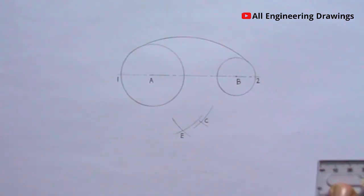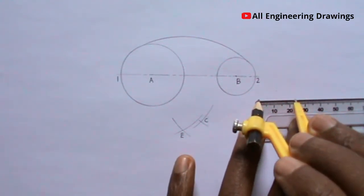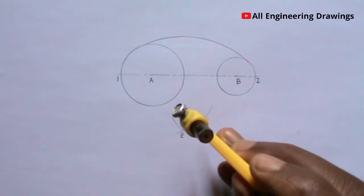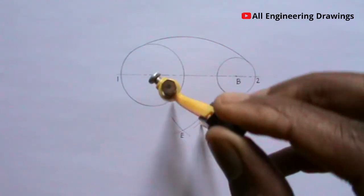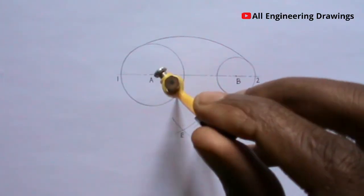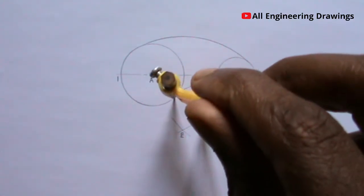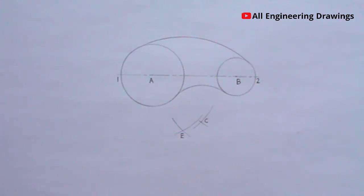Now extend your compass to the radius of the external arc, then place your compass on point C — that is the point where the arcs intersect — and produce the arc. The arc has been drawn successfully. You can now dimension the drawing.